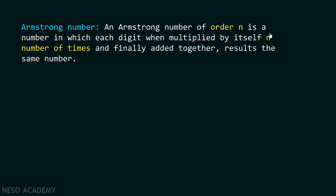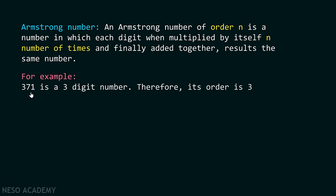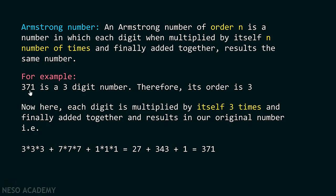An Armstrong number of order n is a number in which each digit, when multiplied by itself n number of times and finally added together, results in the same number. For example, 371 is a three-digit number, so its order is three. We multiply each digit three times and add them together, and the final result equals 371 — the actual number. Therefore, 371 is an Armstrong number.